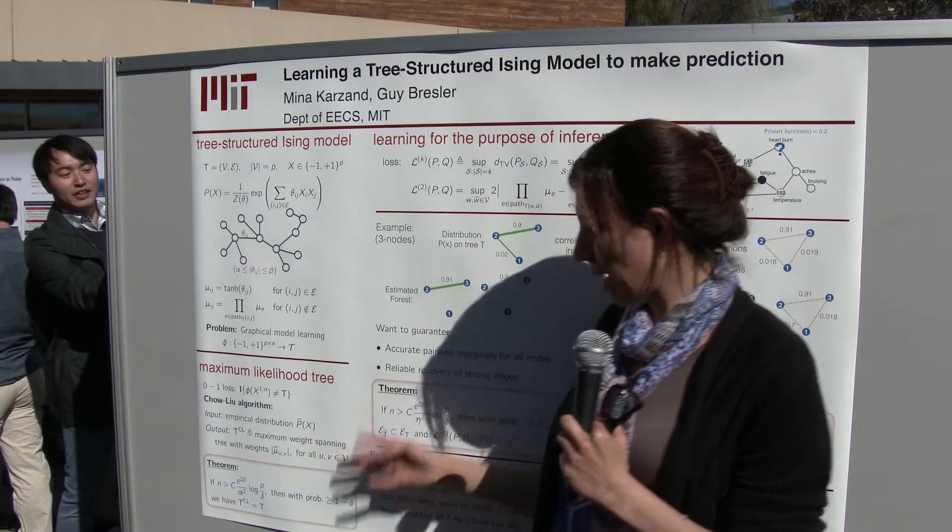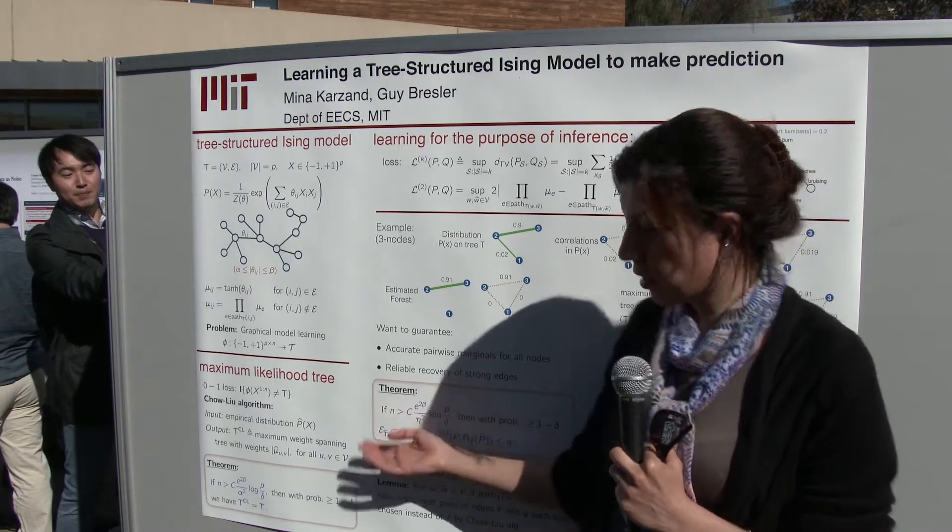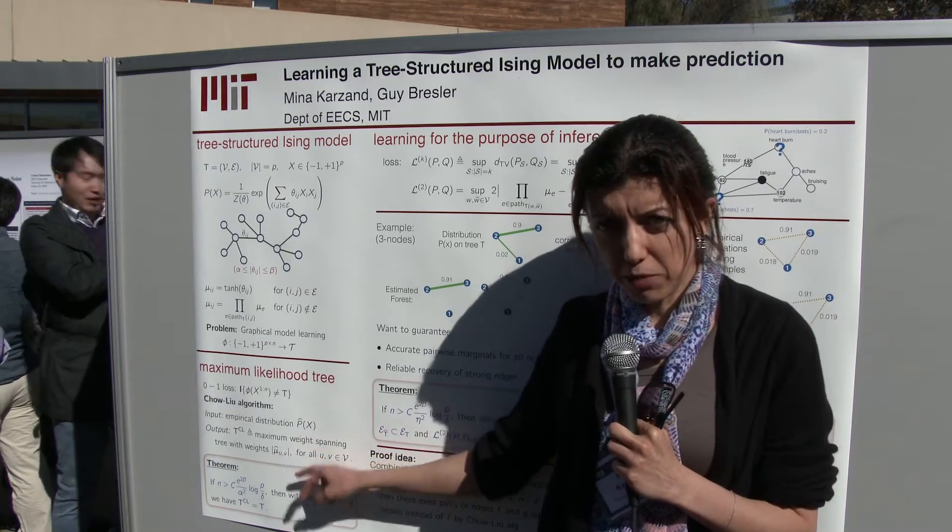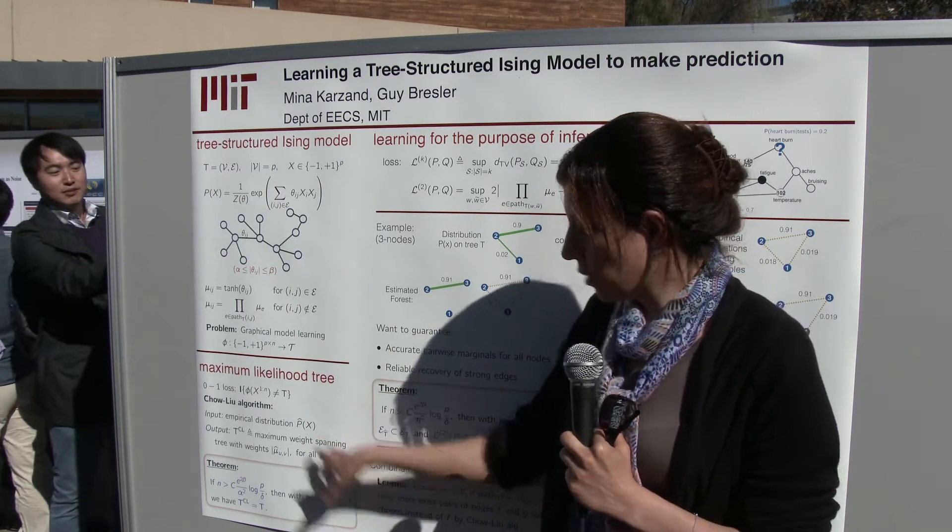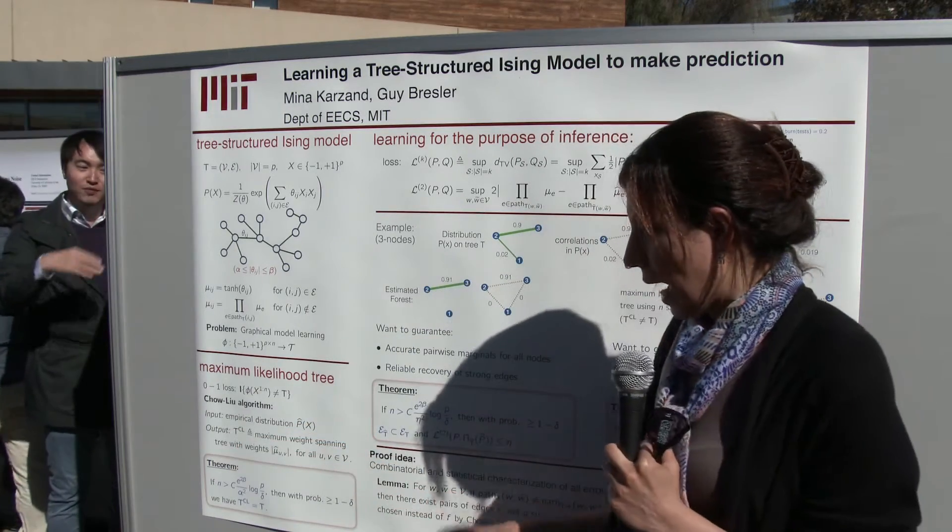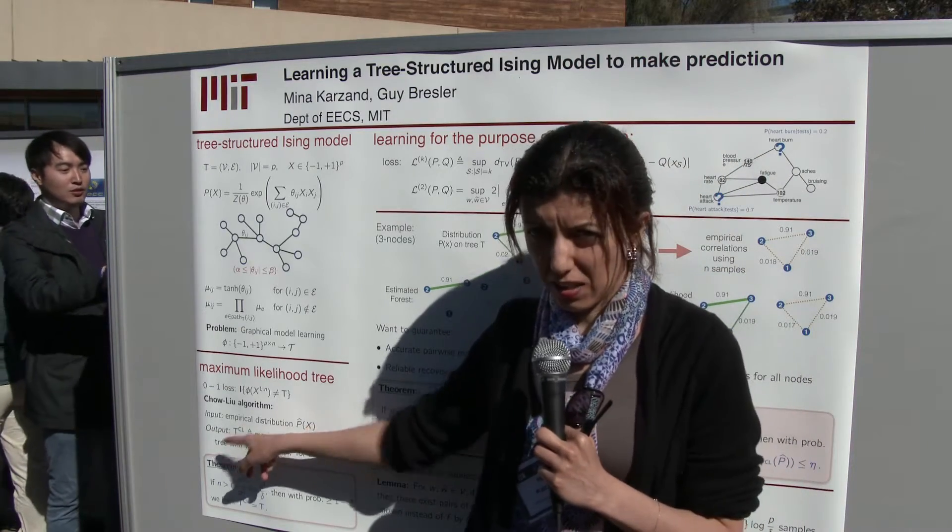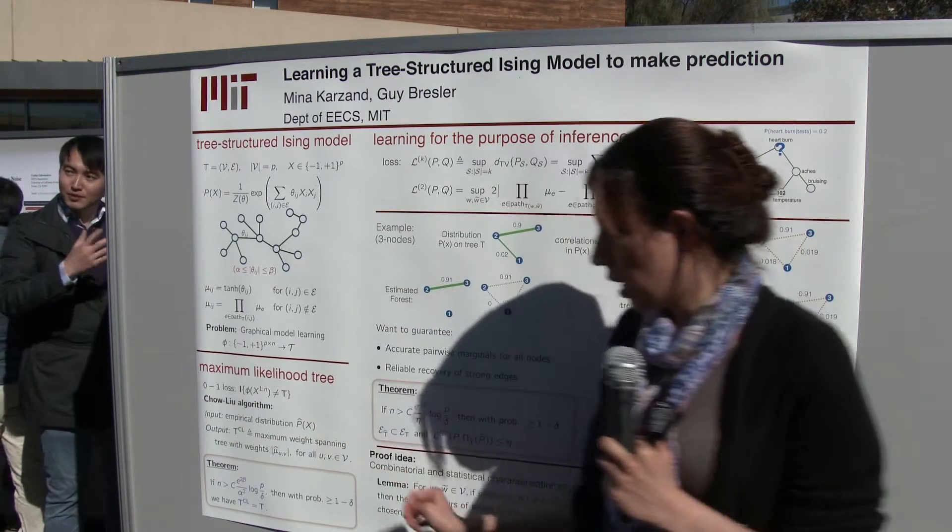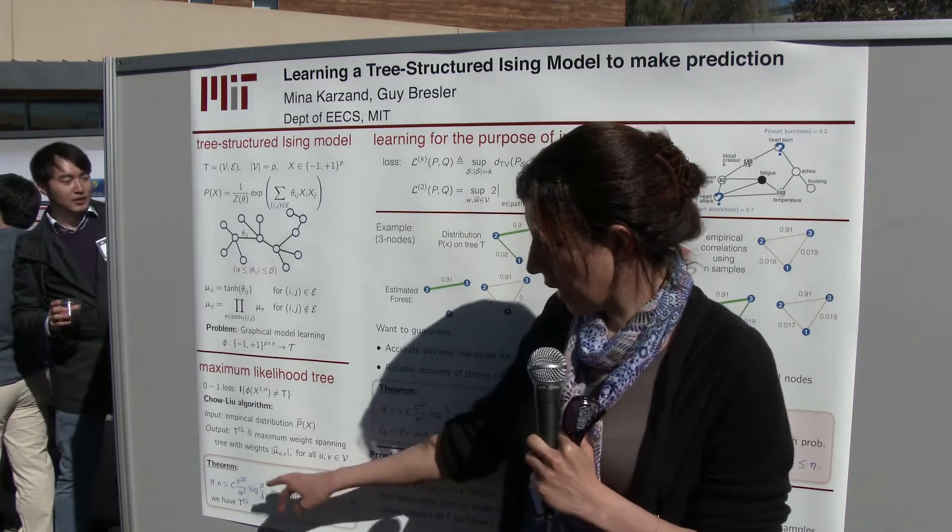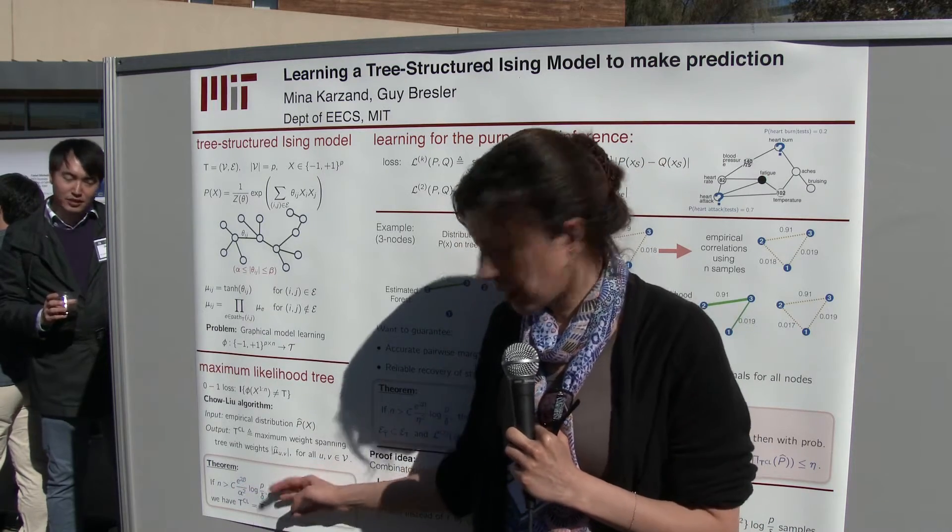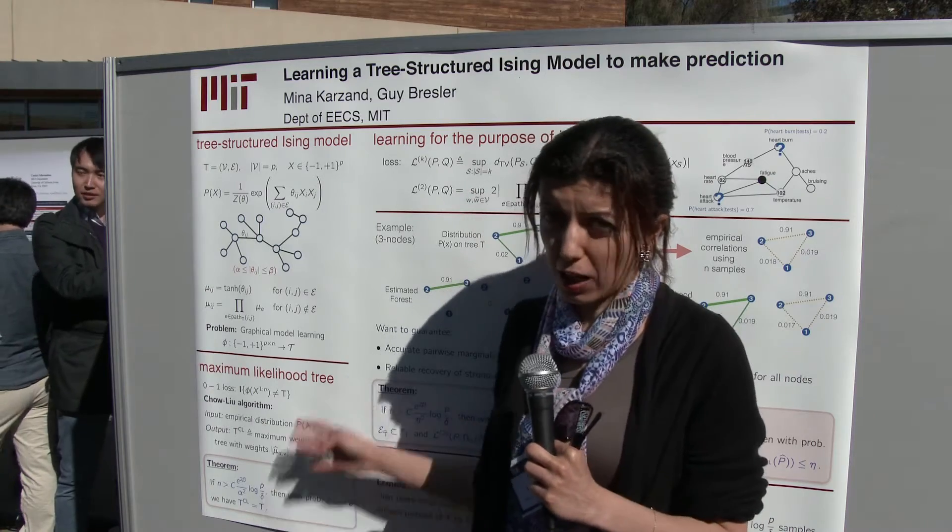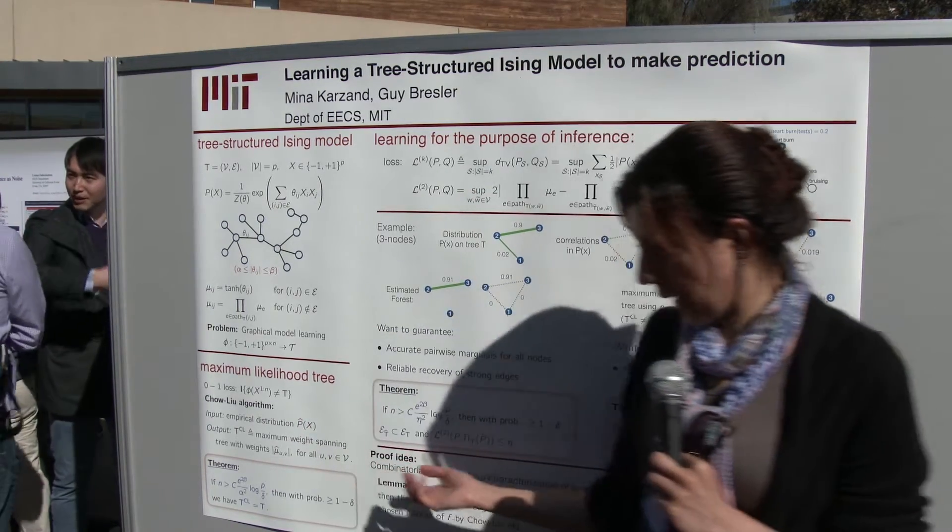The algorithm is very simple. Having n samples, you look at the empirical distribution of n samples, then you calculate the empirical correlation between every pair of nodes in the graph, and you run the maximum weight spanning tree over these empirical correlations. We have a theorem which shows that if the number of samples is greater than e to the power of 2 beta over alpha squared log p, then with high probability, the output of this algorithm is exactly equal to the true tree.